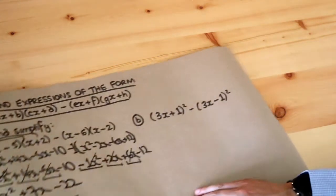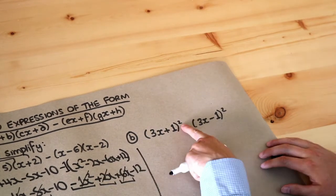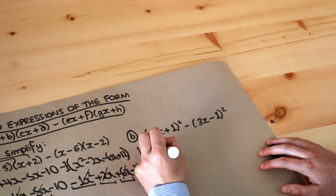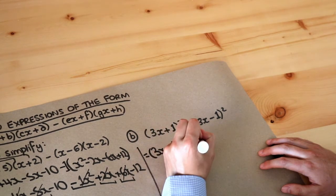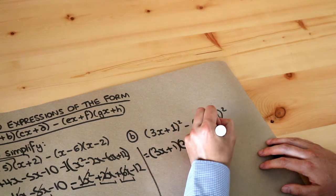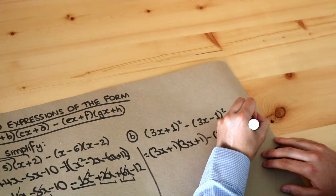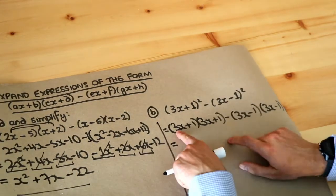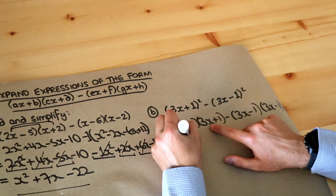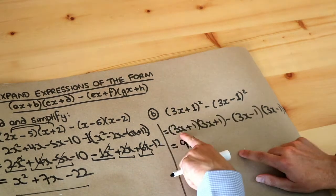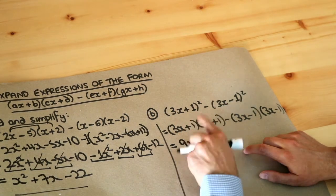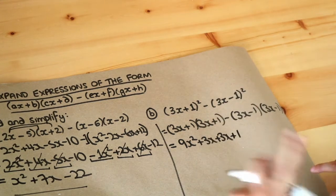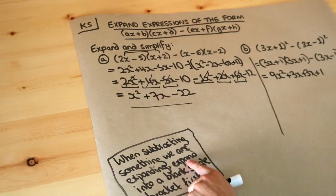Let's do the same for the second example. We've got brackets squared, so remember we can write out the bracket twice — squaring means you times 3x plus 1 by itself. Then we can do exactly what we did before. Let's expand the first brackets: 3x times 3x is 9x squared, 3x times 1 is plus 3x, 1 times 3x is plus 3x, and 1 times 1 is plus 1.